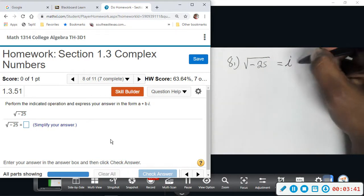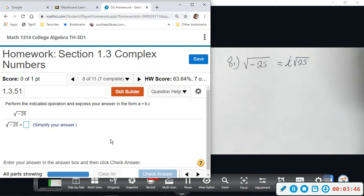And the square root of 25 is five. So we have five i. So that's it.